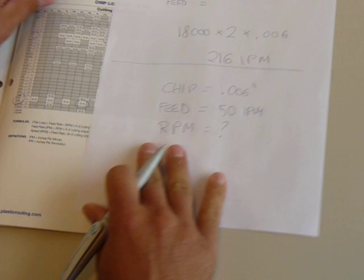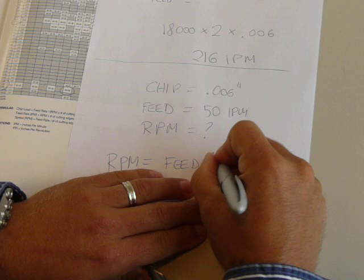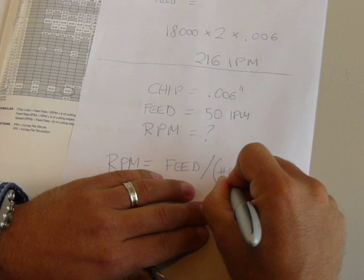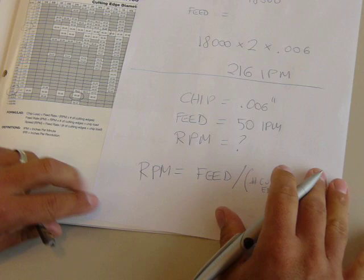Simply, the formula is RPM equals the feed rate divided by the number of cutting edges times the chip load. This formula is listed in our catalog to provide you with that. So basically, if we plug in the values we know